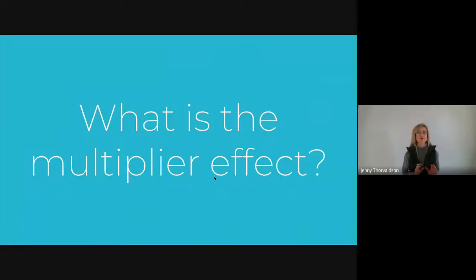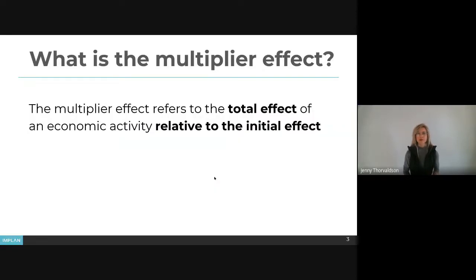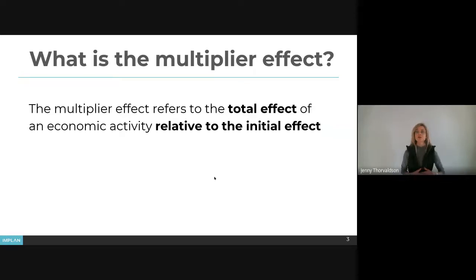Just to do a very quick overview to make sure everyone's on the same page, I'm going to summarize very briefly what the multiplier effect is. The multiplier effect basically refers to the total effect of an economic activity relative to the initial effect. An initial effect might be something like a new motor vehicle manufacturing plant being built in a region. The total effect is more than the initial effect because the initial effect kicks off ripple effects in other industries due to the purchase of supplies, services, and payment of wages to workers, who spend some of their wages locally. That's why the initial effect is multiplied to get your total effect.